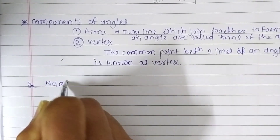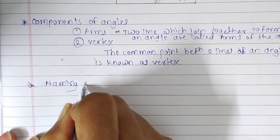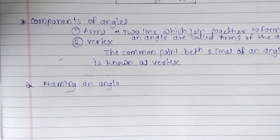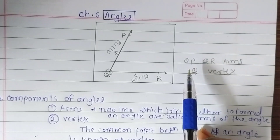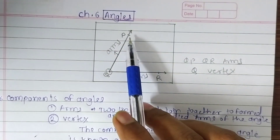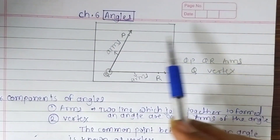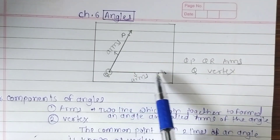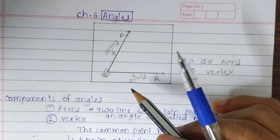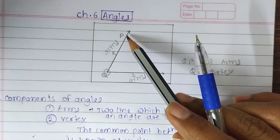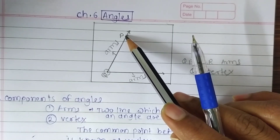Now, naming an angle. An angle is named by three letters. The letter in the middle represents the vertex of the angle. Here, in our figure, we give the three letters P, Q, and R to identify this angle. So the name of the angle is P, Q, R — not P, R, Q. Always remember that the vertex of the angle is in the middle of the name. So our name for the angle is angle PQR.